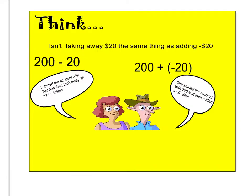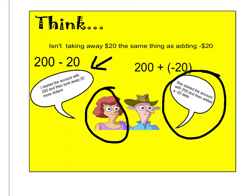If you think about it, isn't taking away $20 the same thing as adding negative $20? So this fine lady started the account with $200 and then she took away 20 more dollars — or you could say she started with $200 and added a $20 debt. That's how it's negative 20. Either way you write it, it's the same thing, just a different way of thinking about it.